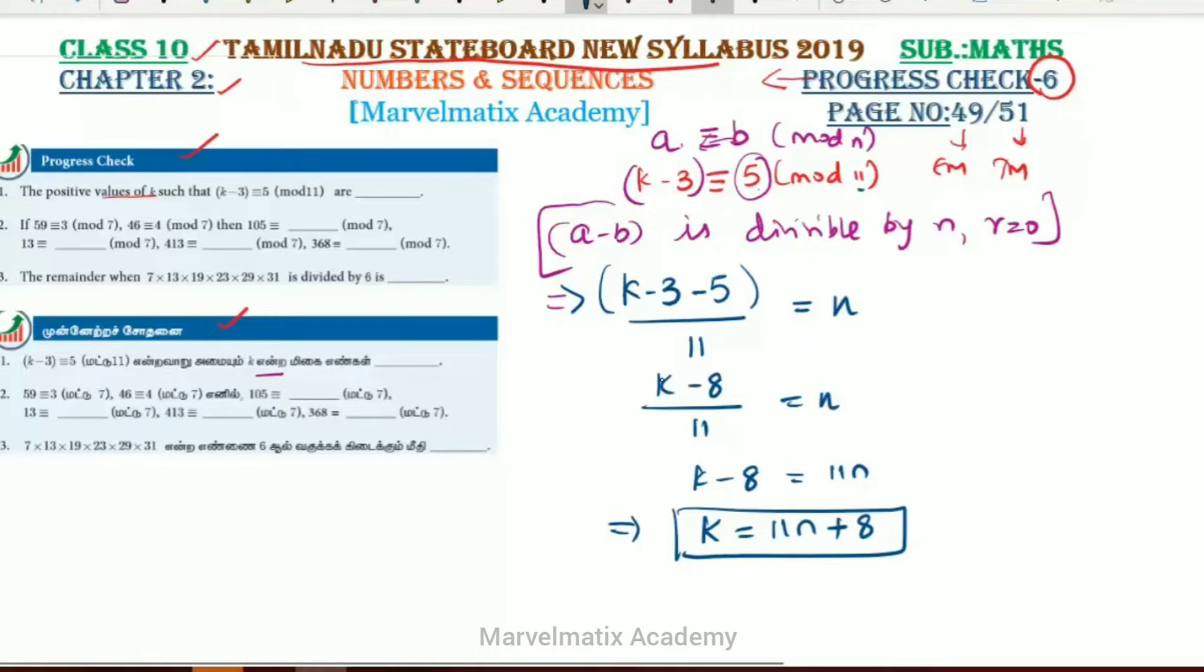For k equals 11n plus 8, when n equals 1, k equals 19. When n equals 2, k equals 30. When n equals 3, k equals 41. So the answer we need to find is 19, 30, 41, et cetera.